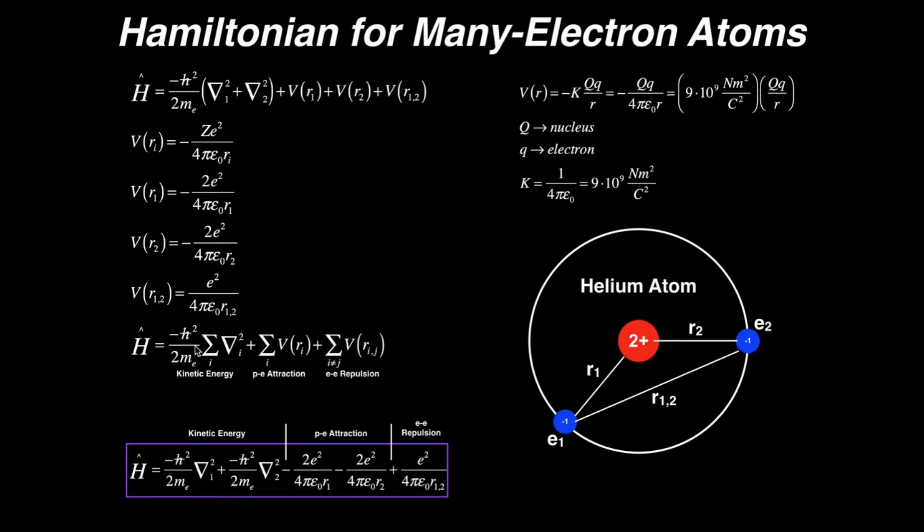We also have to add on the attractions. The only attractions here we have are between the nucleus and each electron, because they're oppositely charged. Therefore you should have a favorable columbic potential energy between each electron and the nucleus. And notice also those are negative as well, because attractive forces or attractive potential energies are favorable.